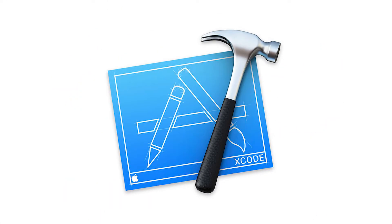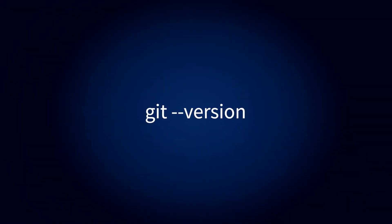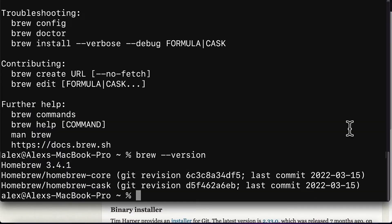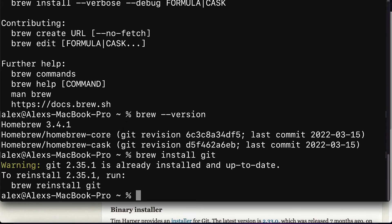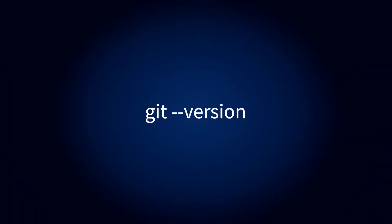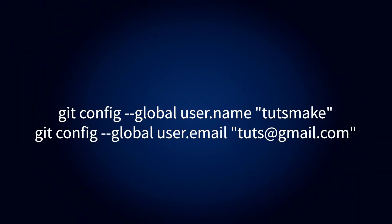If you have installed Xcode, Git may already be installed. To find out, open a terminal and enter git version. The easiest way to download Git on a Mac is via the standalone installer. Follow the prompts to install Git, then open a terminal and verify the installation was successful by typing git version.